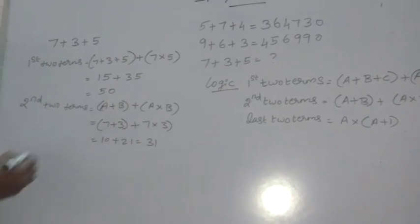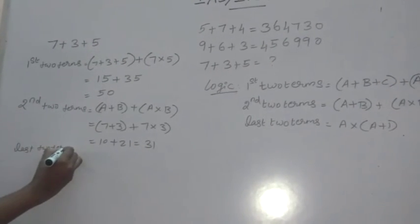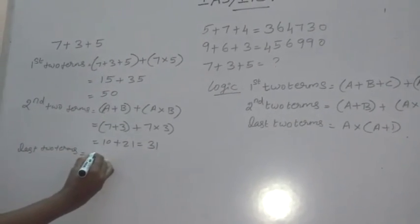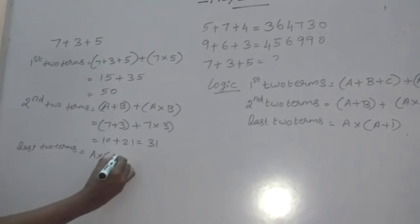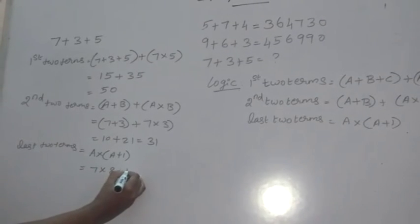And the last term, last 2 terms. The formula is a into a plus 1. That is, 7 into 8 is equal to 56.